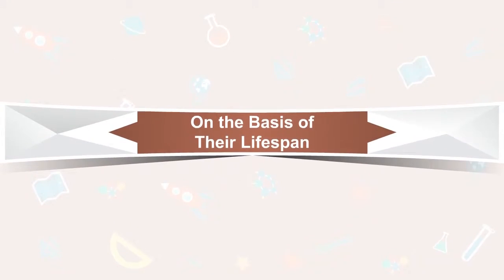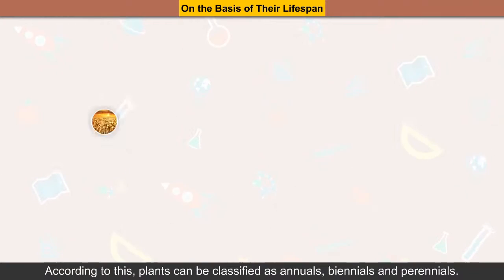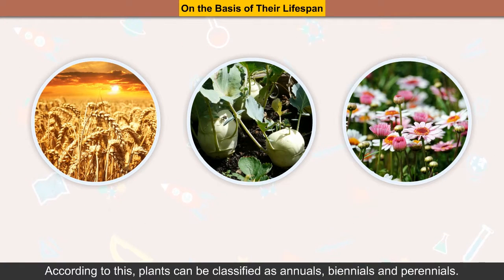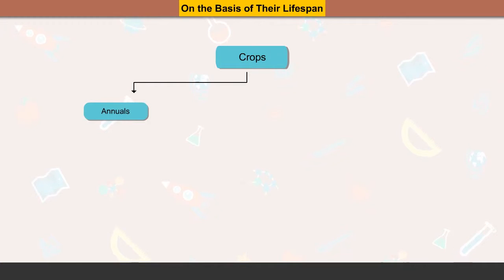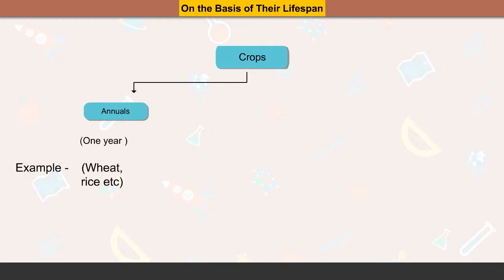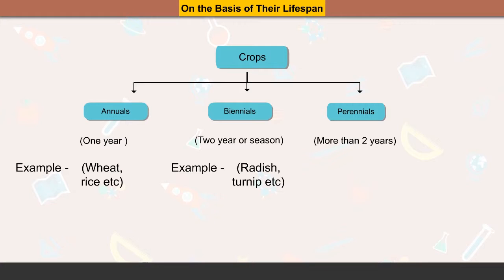On the basis of their lifespan, the lifespan of plants can also be a deciding factor for their classification. According to this, plants can be classified as annuals, biennials, and perennials. Annuals complete their life cycle in one year — example: wheat, rice, etc. Biennials take two years or seasons — example: radish, turnip, etc. Perennials live more than two years — example: rose, pine, etc.